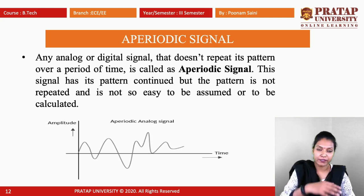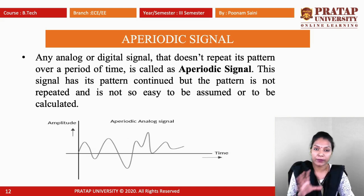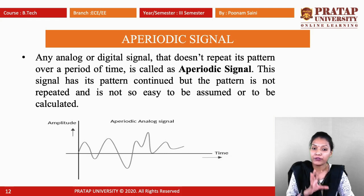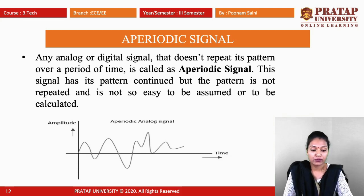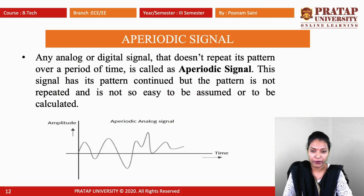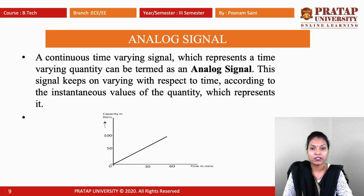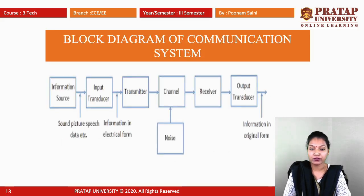The aperiodic signal is the reverse — there is no repetition. It does not repeat its pattern over a period of time and is not easy to determine or calculate. So there are four types of signals discussed: analog, digital, periodic, and aperiodic.